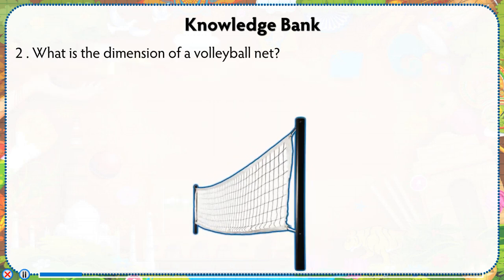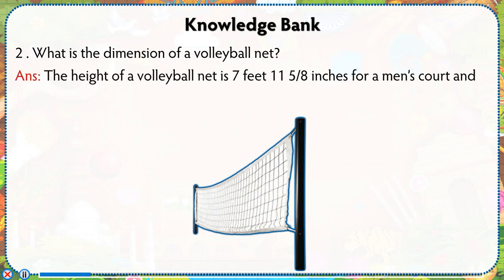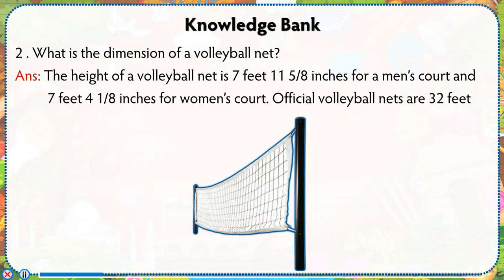What is the dimension of a volleyball net? The height of a volleyball net is 7 feet 11.5/8 inches for a men's court and 7 feet 4.1/8 inches for a women's court. Official volleyball nets are 32 feet long and 39 inches tall.